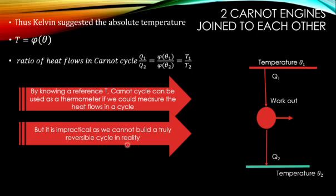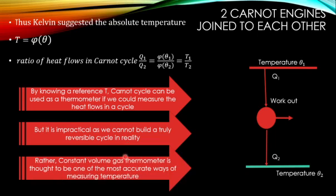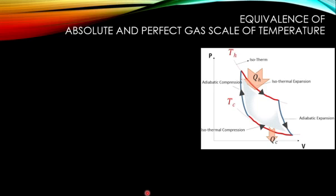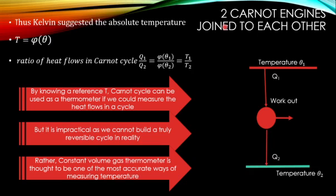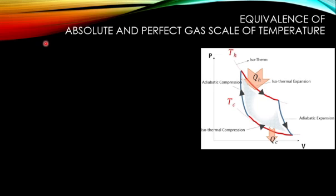So what kind of thermometer is reliable? The constant volume gas thermometer is considered to be the most accurate for measuring temperature. We will now establish the equivalence between absolute temperature T and the perfect gas scale of temperature theta. Earlier, absolute temperature was written as just a function of theta, but now we will show it is not merely a function — it is theta itself. For this, let us consider the Carnot cycle.